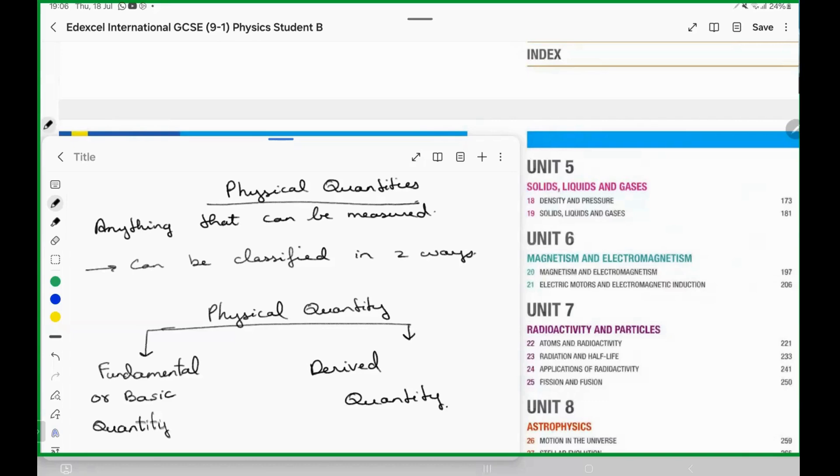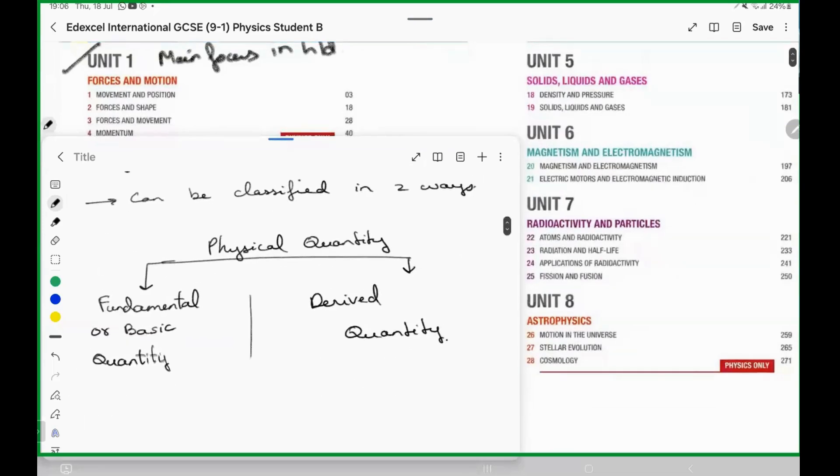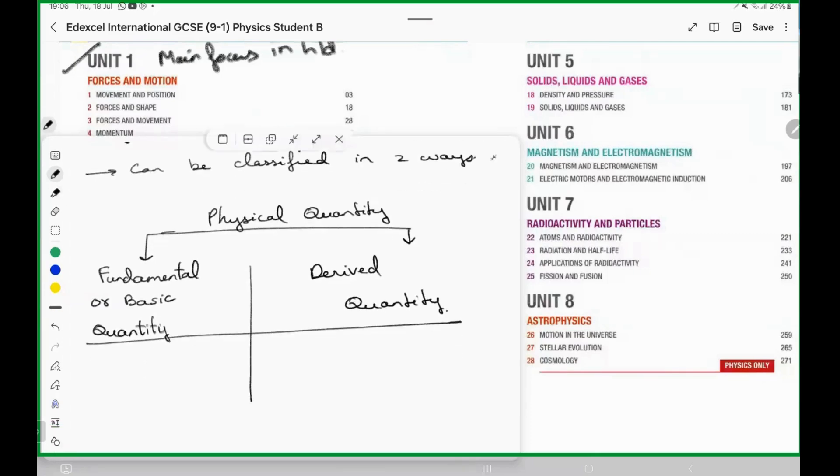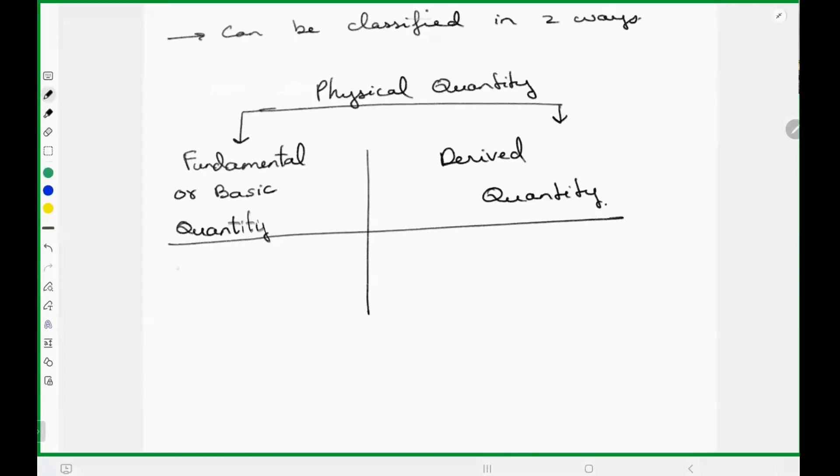So when you talk about fundamental physical quantities, what are the fundamental physical quantities? Fundamental or basic quantities can be directly measured. And derived quantities are the quantities which cannot be directly measured.